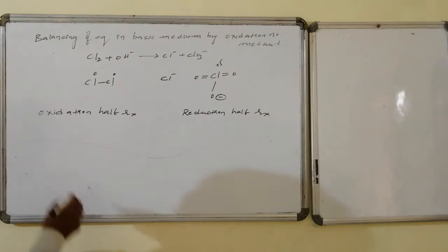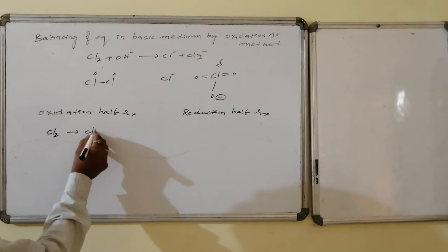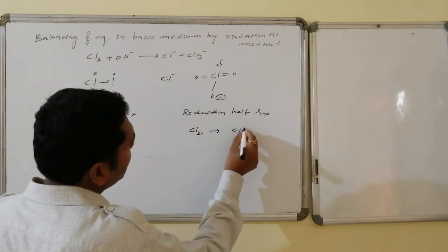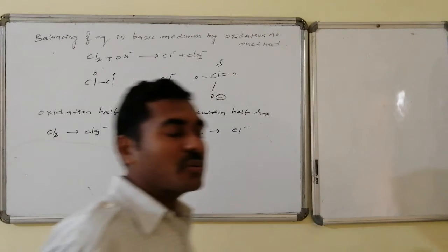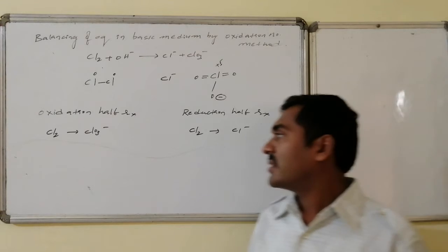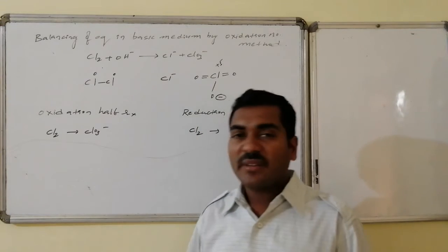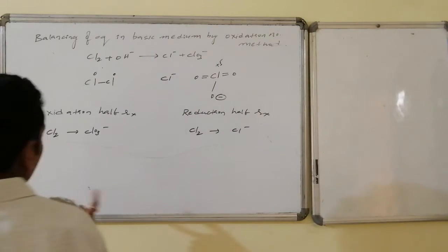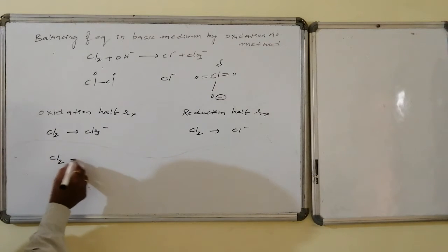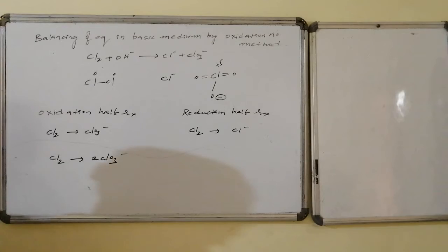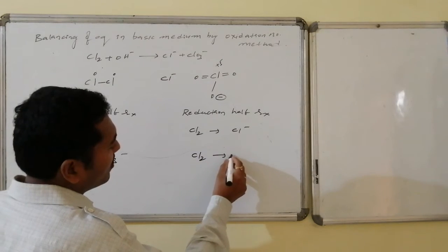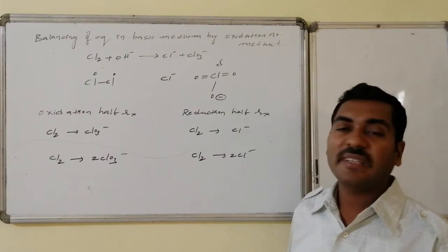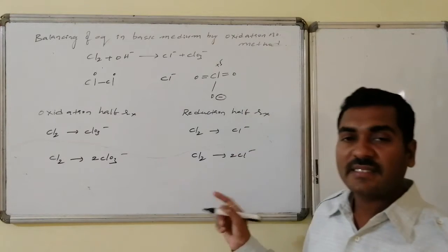The oxidation half reaction is Cl₂ converted to ClO₃⁻, and the reduction half reaction is Cl₂ converted to Cl⁻. First, we balance the number of central atoms. Since one Cl₂ molecule contains two chlorine atoms, we need two chlorine atoms on the product side. So: Cl₂ → 2ClO₃⁻ for oxidation, and Cl₂ → 2Cl⁻ for reduction.